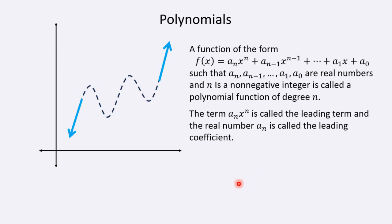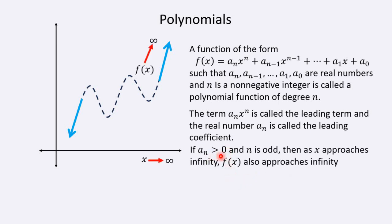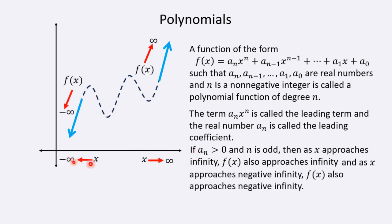For instance, if the leading coefficient is positive and the degree n is odd, then as x approaches infinity — as x gets really large — after going through all the hills and valleys of the polynomial, y will eventually approach infinity as well. And as x goes to negative infinity, y is also going to go to negative infinity. So the end behaviors: as x gets small, y gets small; as x gets large, y gets large.